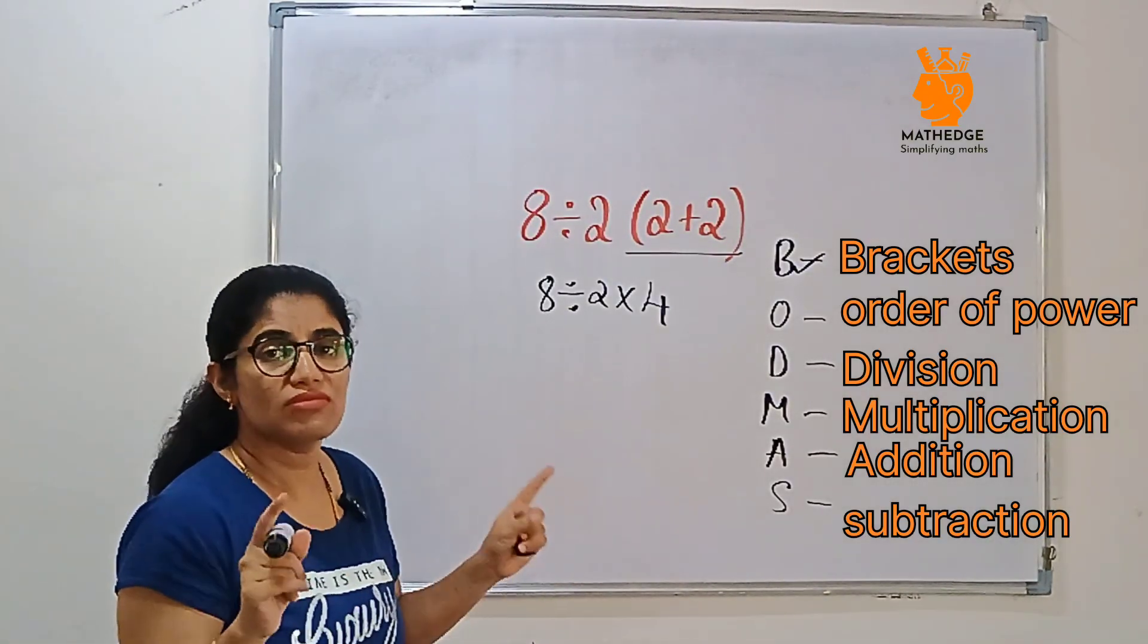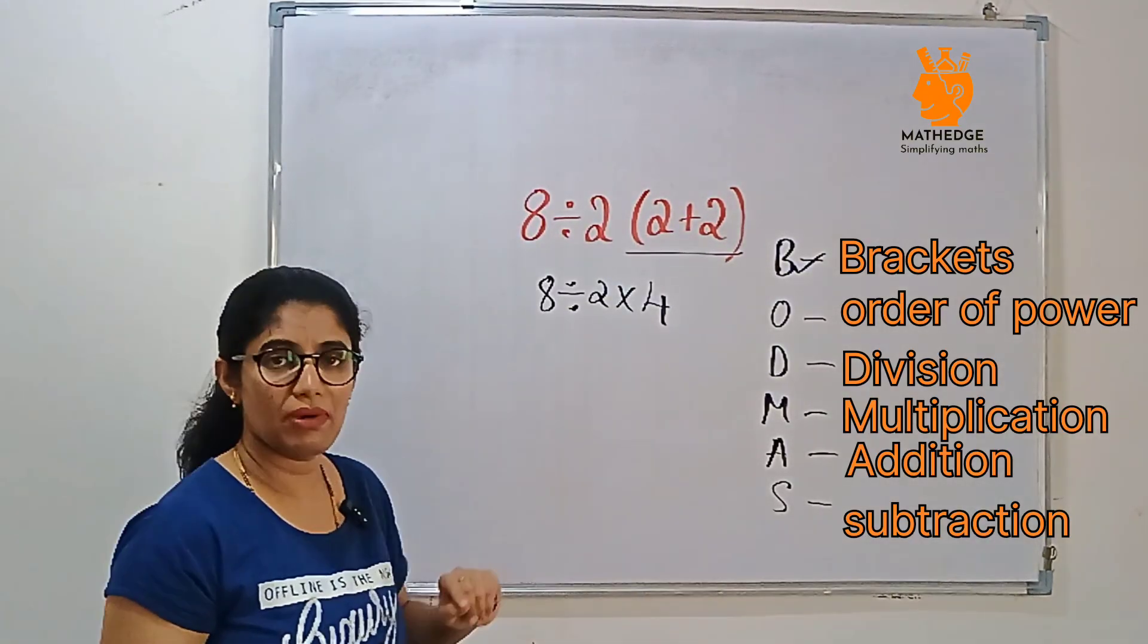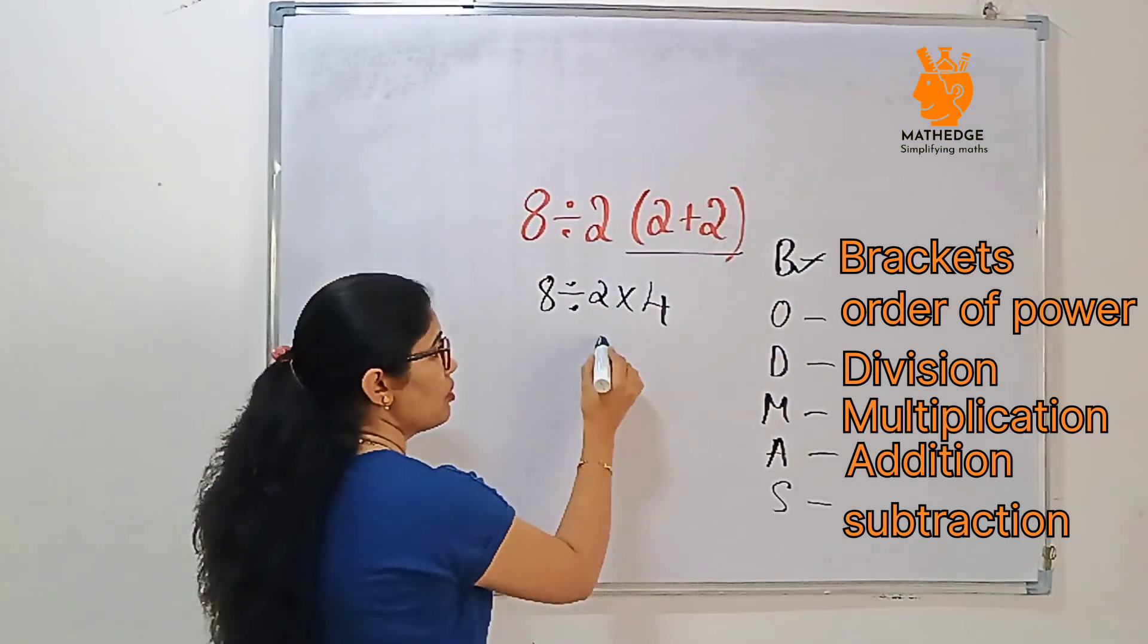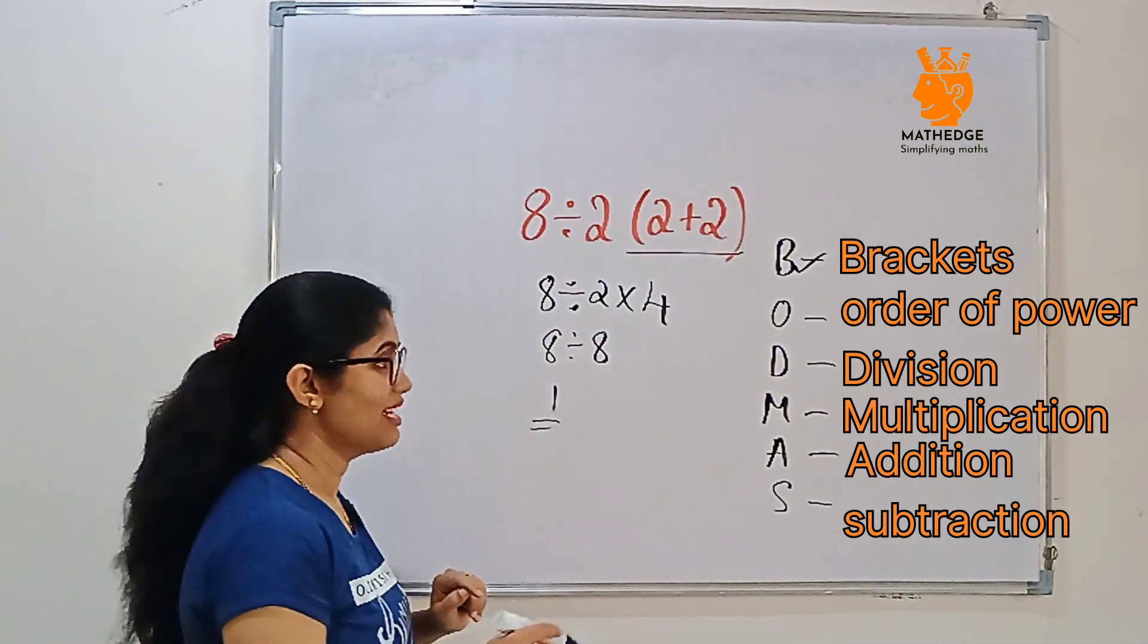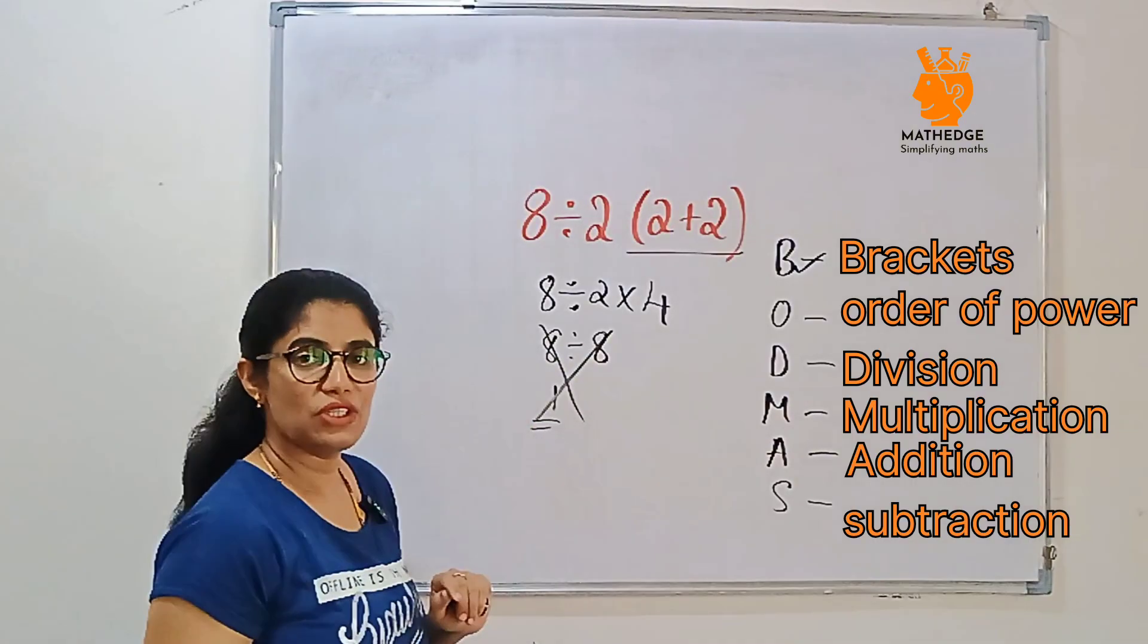After that, most of them will do wrong here only. What's the tricky part? Most of them will do 4×2 is 8, 8÷8 you will get 1. No, that is not the answer.